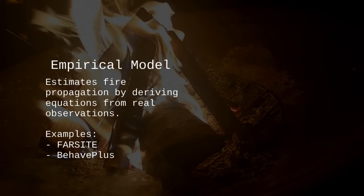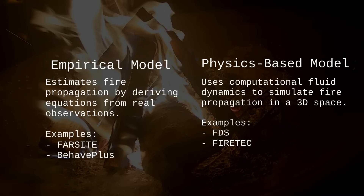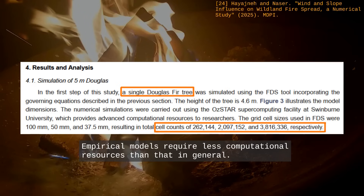I have focused on empirical models, which derive equations from observations. We can also use physics-based models like FDS or FireTech, which use computational fluid dynamics to simulate fire propagation in a 3D space. Those are not perfect simulations — they make some approximations — but they can model phenomena more accurately and yield better results. At the same time, they are more computationally expensive and take more time to run. All fire modeling programs are limited by computational speed. There is always a trade-off between how realistic and how fast you want your results. Instead of aiming for perfect simulations, fire control agencies develop practical models that approximate reality to an appropriate level, depending on their objectives.